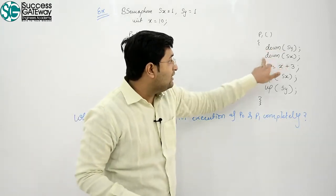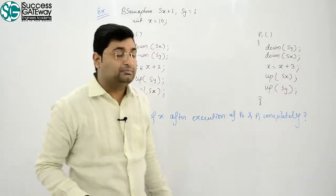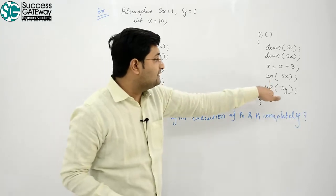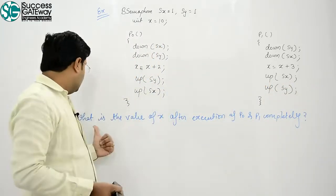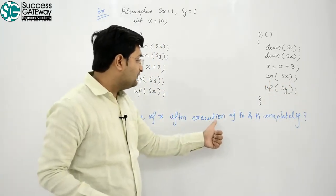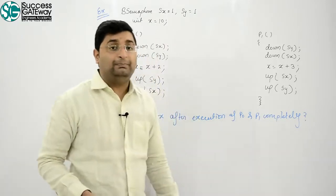Process P1 executes: down Sy, down Sx, x equals x plus 3, up Sy, up Sy. What is the value of x after execution of P0, P1 completely?